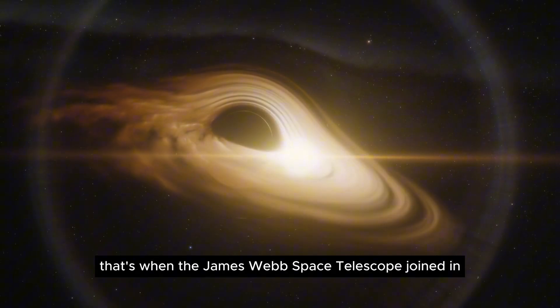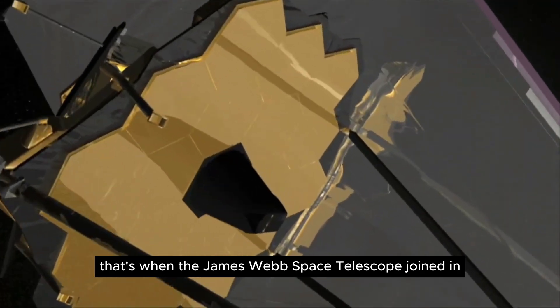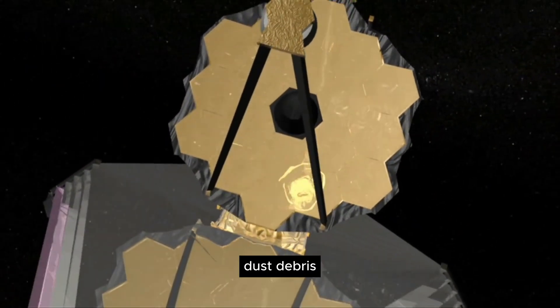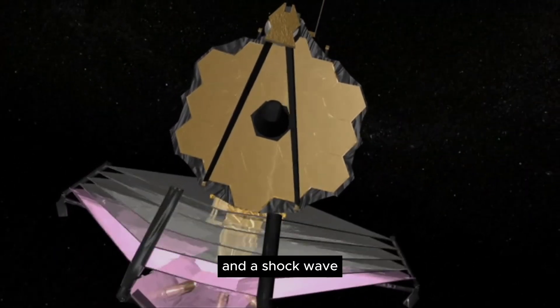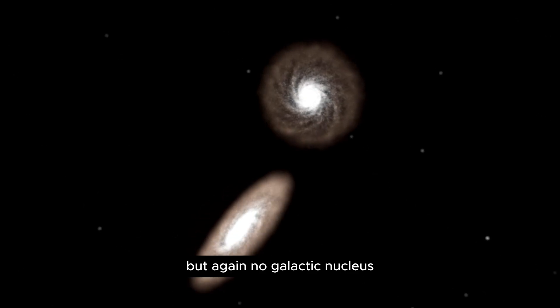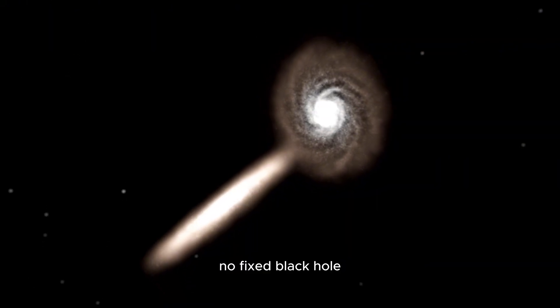That's when the James Webb Space Telescope joined in. Its infrared sensors picked up heat signatures, dust, debris, and a shock wave consistent with a star being torn apart. But again, no galactic nucleus. No fixed black hole.